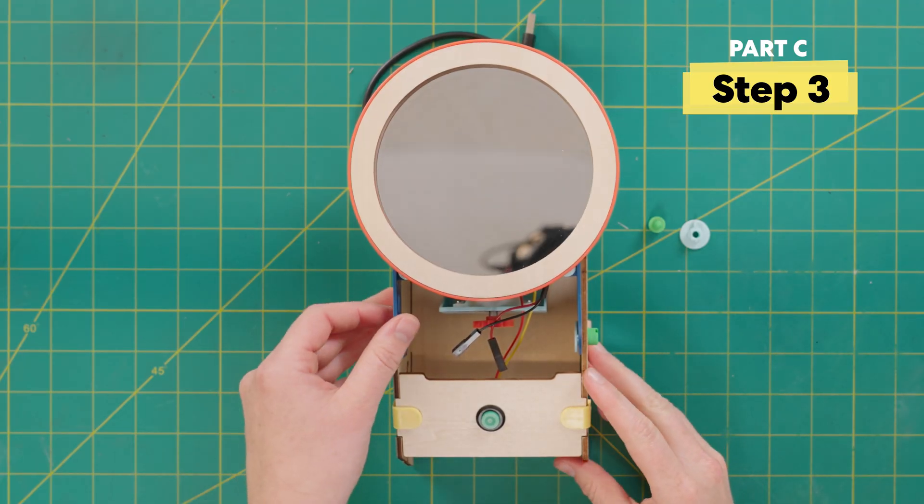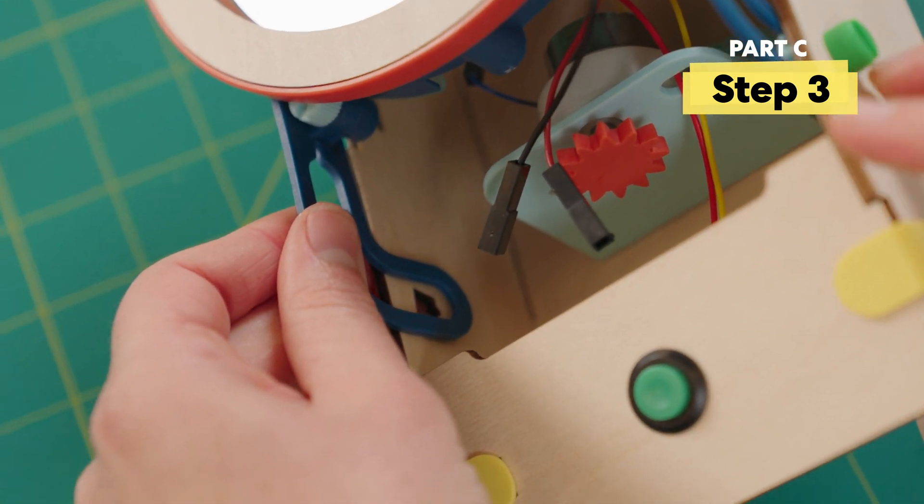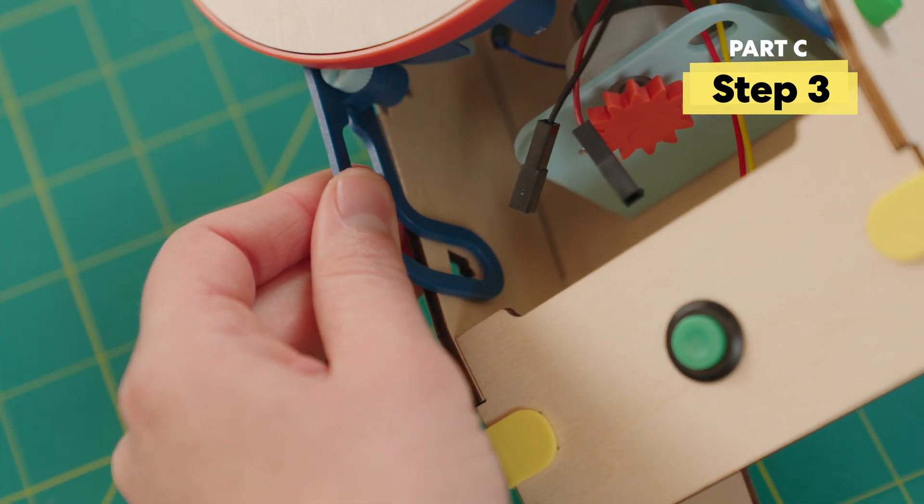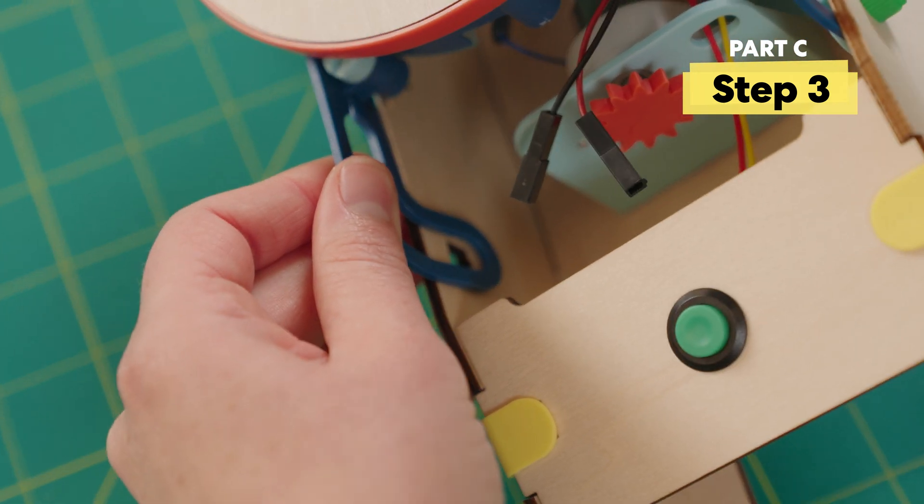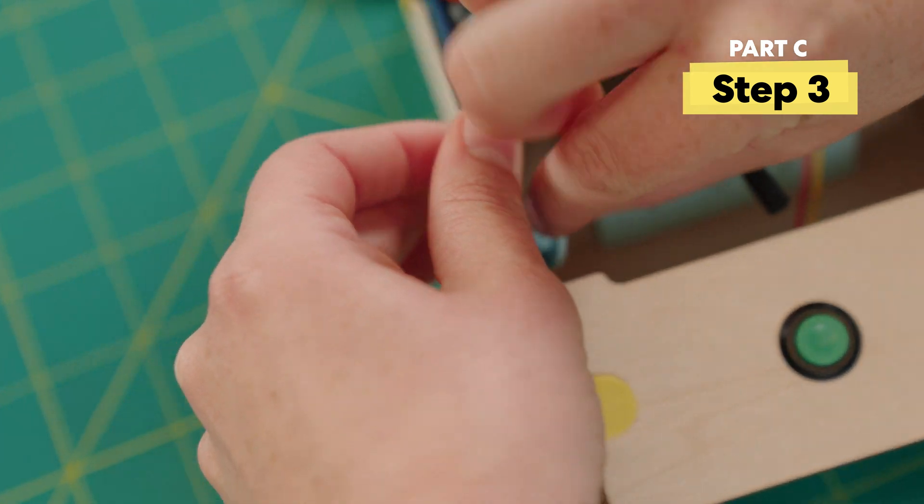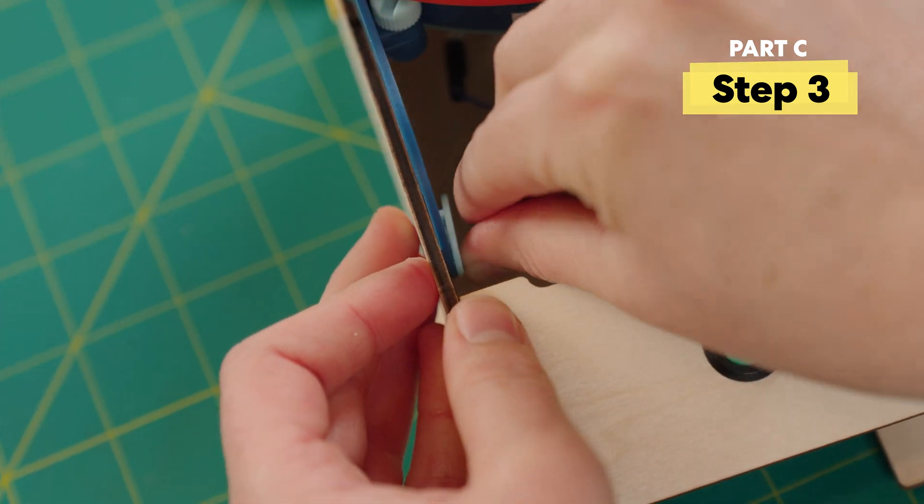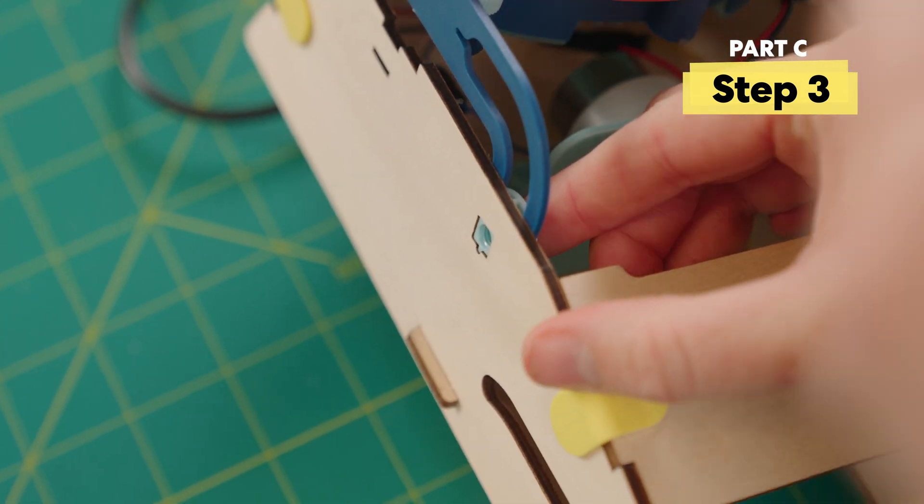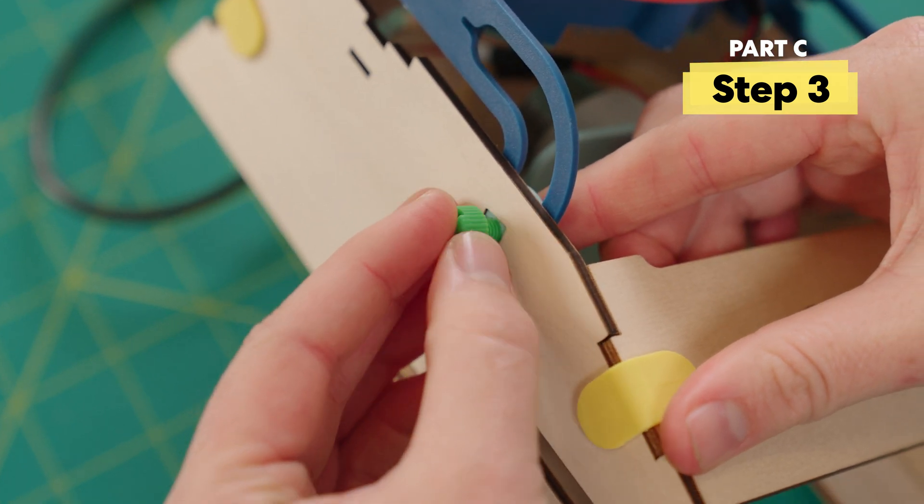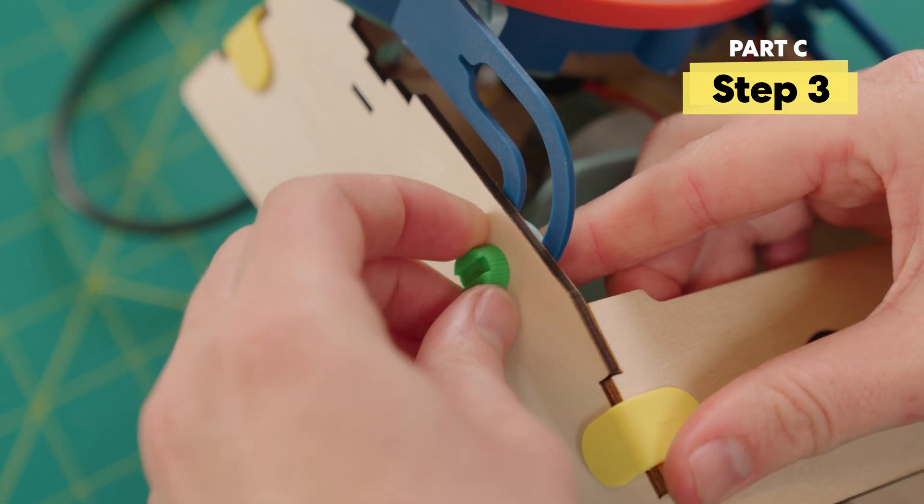Let's do the other side. Lining up this leg of the mirror with the hole in the wood. Grabbing our other blue bracket. Slotting that right into place. And finally, grabbing this green screw and screwing that until it's tight.